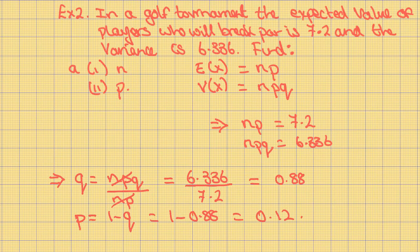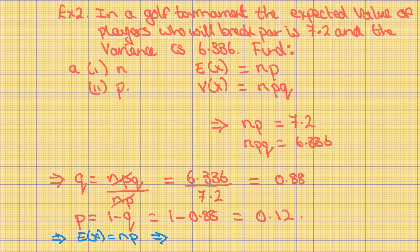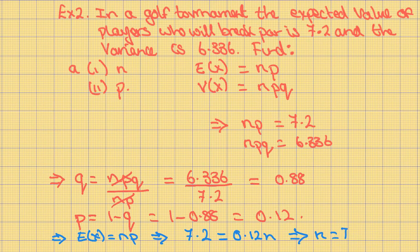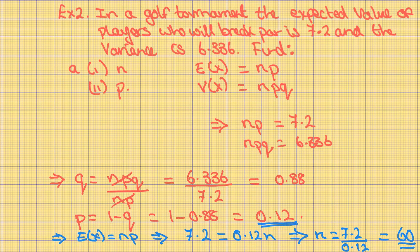Now, knowing P, we can find N using the expected value. The expected value of X is equal to NP, therefore 7.2 is equal to 0.12 times N. Therefore, N is equal to 7.2 divided by 0.12, which is equal to 60. So N is equal to 60 and P is equal to 0.12.